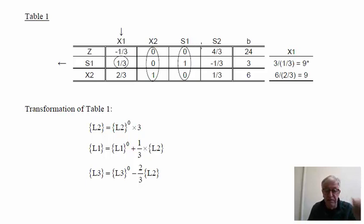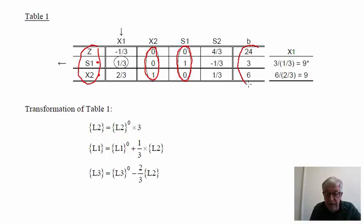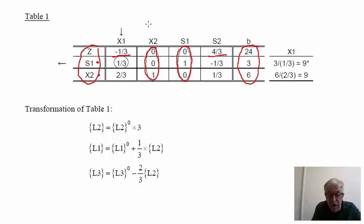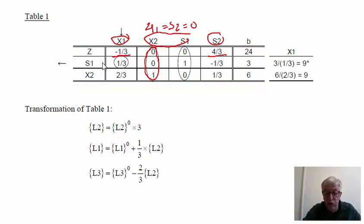In the table of the first iteration, we can extract a solution by identifying the new basic variables. However, the solution is not optimal because we have a negative coefficient in the z row for one variable, meaning the partial derivative is positive. Reading the current solution with the non-basic variables set to zero, we obtain specific values for the basic variables. The solution is not optimal, so we need to find a new solution by repeating the process.